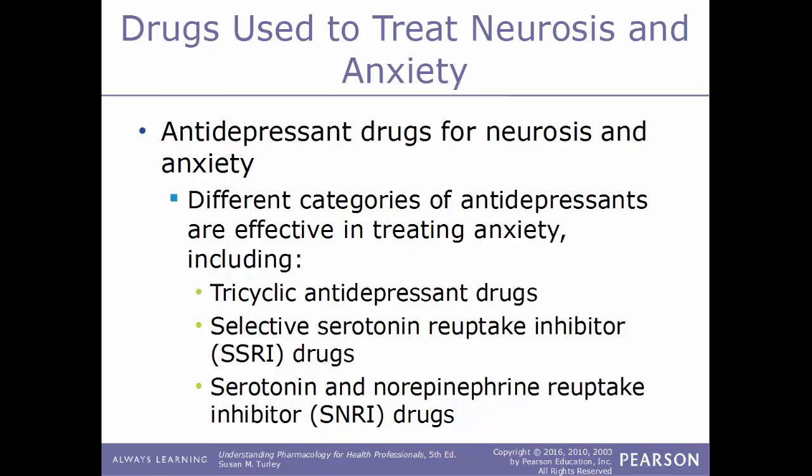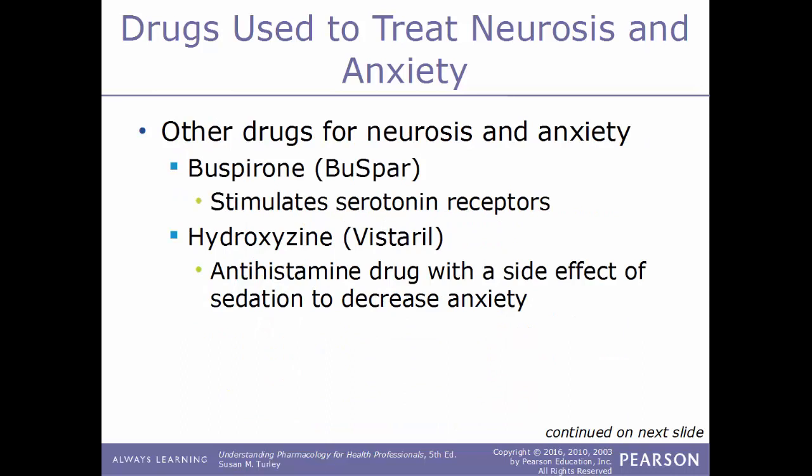Other categories of drugs used to treat neurosis and anxiety include antidepressants — specifically tricyclic antidepressants, SSRIs (selective serotonin reuptake inhibitors), and SNRIs (serotonin and norepinephrine reuptake inhibitors). Another drug used is buspirone (Buspar), which acts by stimulating serotonin receptors within the brain.